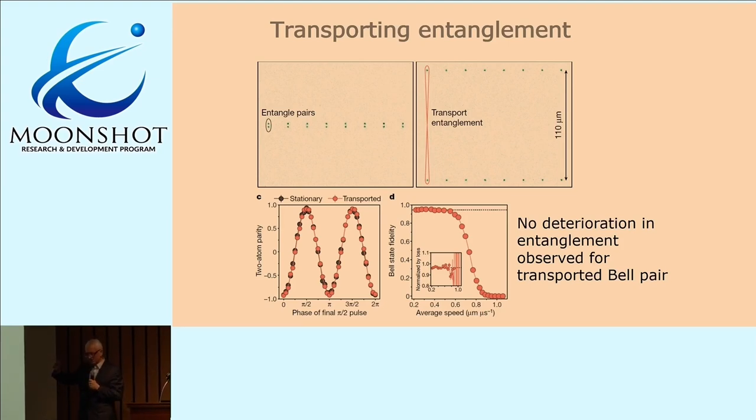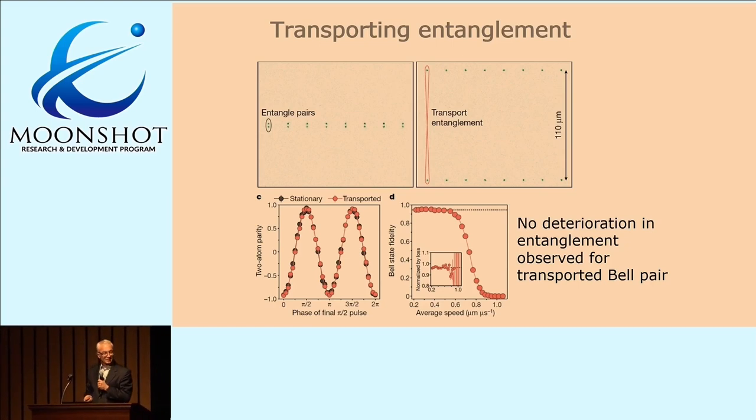There's just some very simple dynamical decoupling here to keep the system. What I should point out, maybe it's not clear to the non-experts here, we're actually using three different levels. We're using as a qubit the so-called clock states, hyperfine ground states, which have these long coherence times of seconds. Only when we want to introduce interaction, we map one of the qubit states onto the Rydberg state for a brief period, and then back down. The data are basically stored as hyperfine ground state qubits of very long coherence times.